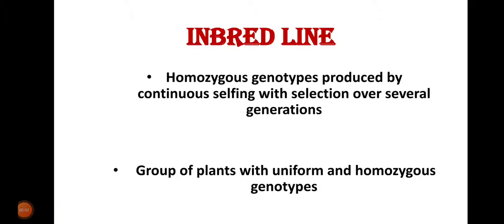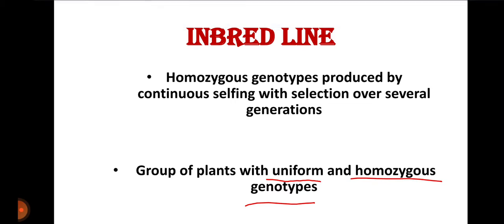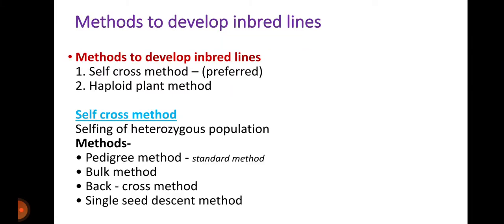Inbred lines have homozygous genotypes produced by continuous selfing with selection over several generations. A group of plants with uniform and homozygous genotypes is called an inbred line.